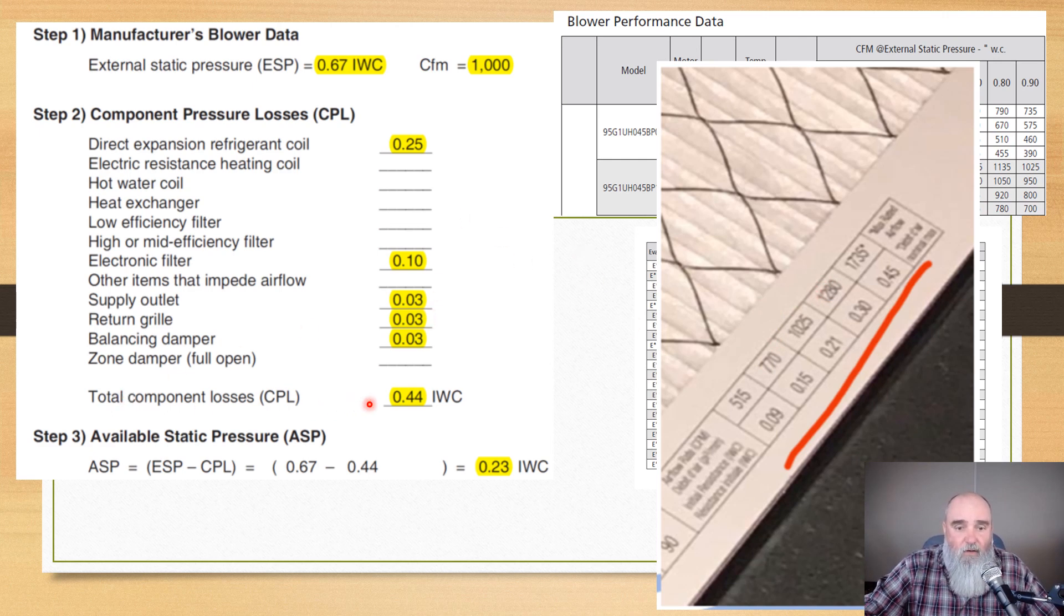Ultimately, we're going to take all of our components, total them up, and that is going to give us our component loss. We're going to deduct our component loss from our external static pressure in step one, and that's how we calculate what our available static pressure is. It's that simple.